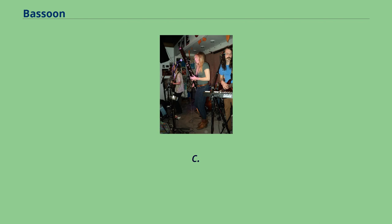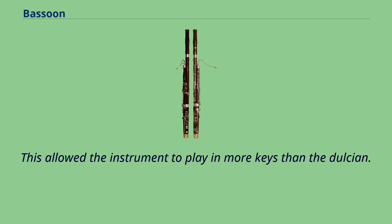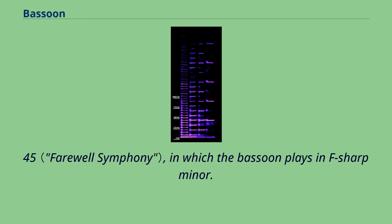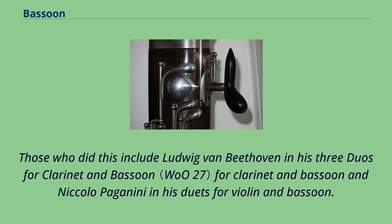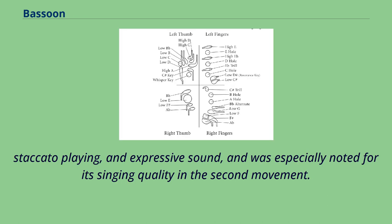From around 1760 to 1830, while the bassoon was still often used to give clarity to the bass line, the capabilities of wind instruments grew as technology advanced during the classical era. This allowed the instrument to play in more keys than the Dulcian. Joseph Haydn took advantage of this in his Symphony No. 45, in which the bassoon plays in F-sharp minor. Composers also began to exploit the bassoon for its unique color, flexibility, and virtuosic ability, rather than for its perfunctory ability to double the bass line. Those who did this include Ludwig van Beethoven in his three duos for clarinet and bassoon, and Niccolò Paganini in his duets for violin and bassoon. In his Bassoon Concerto in B-flat major, K. 191, W. A. Mozart utilized all aspects of the bassoon's expressiveness, and this concerto is often considered one of the most important works in all of the bassoon's repertoire, even today.